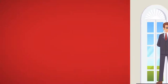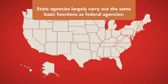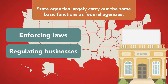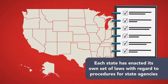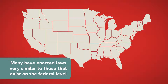There are also administrative agencies on the state level. State agencies largely carry out the same basic functions as federal agencies — enforcing laws, regulating businesses, and implementing state policy programs. While each state has enacted its own set of laws with regard to procedures for state agencies, many have enacted laws very similar to those that exist on the federal level.